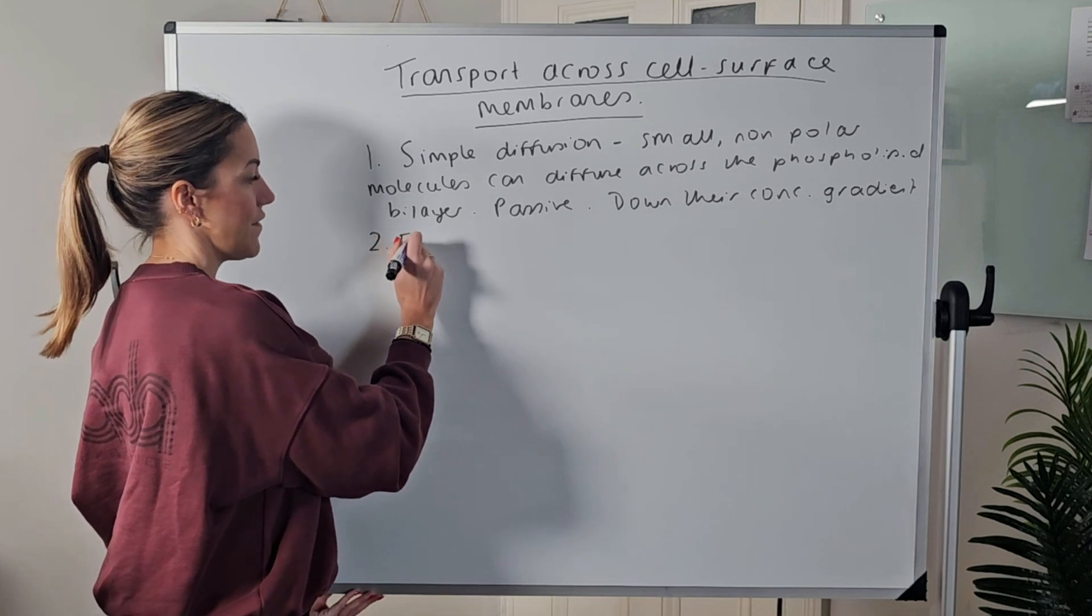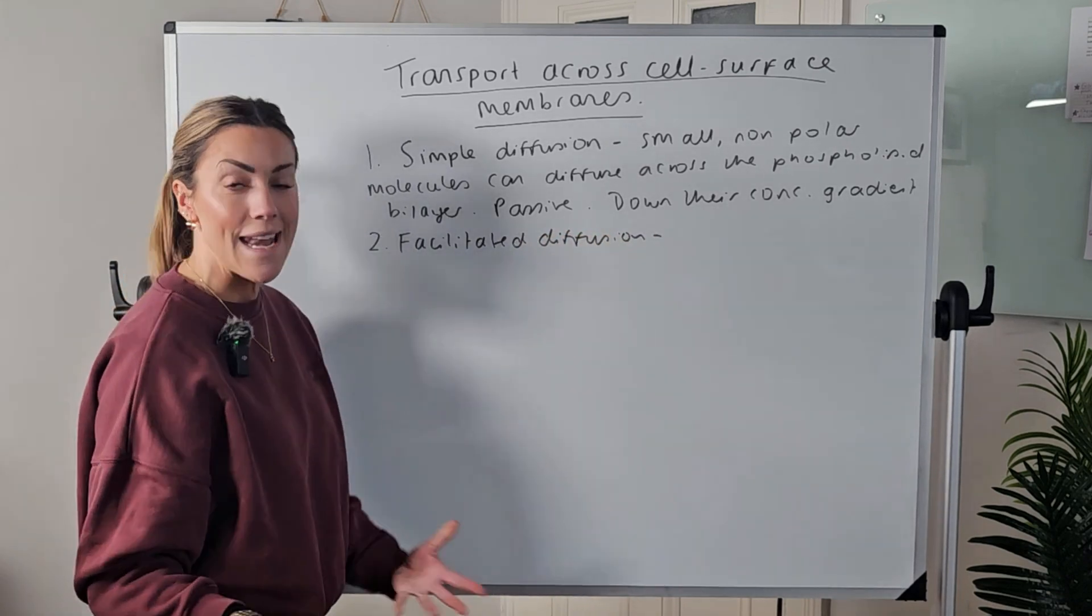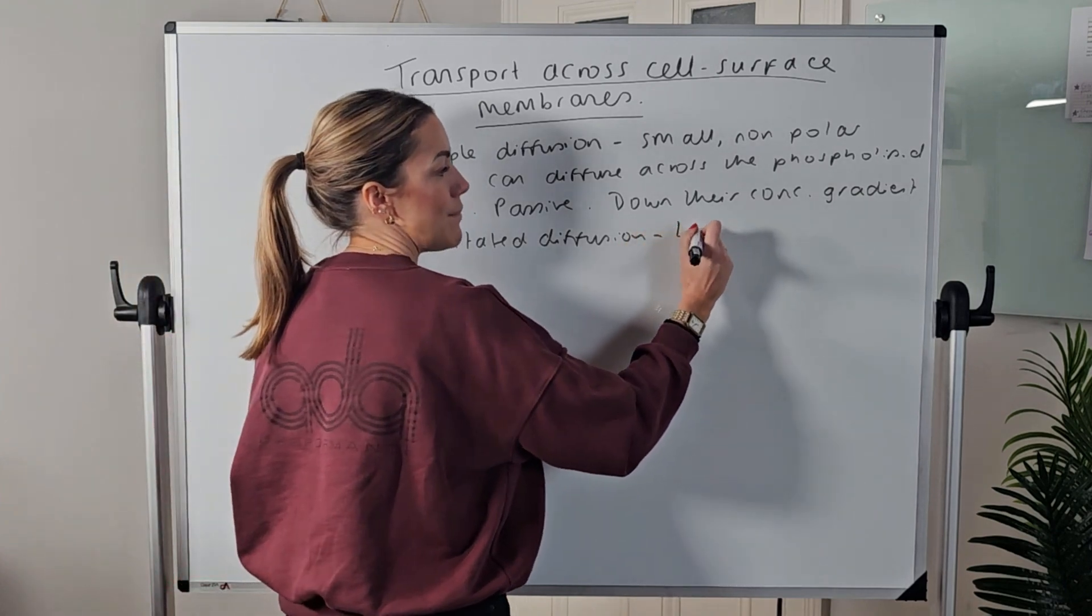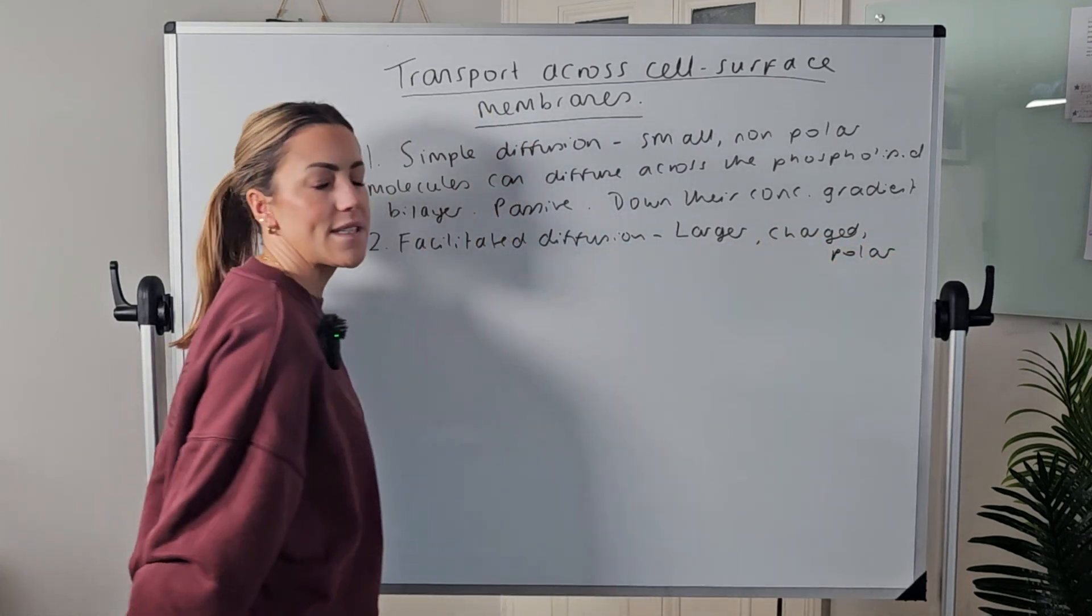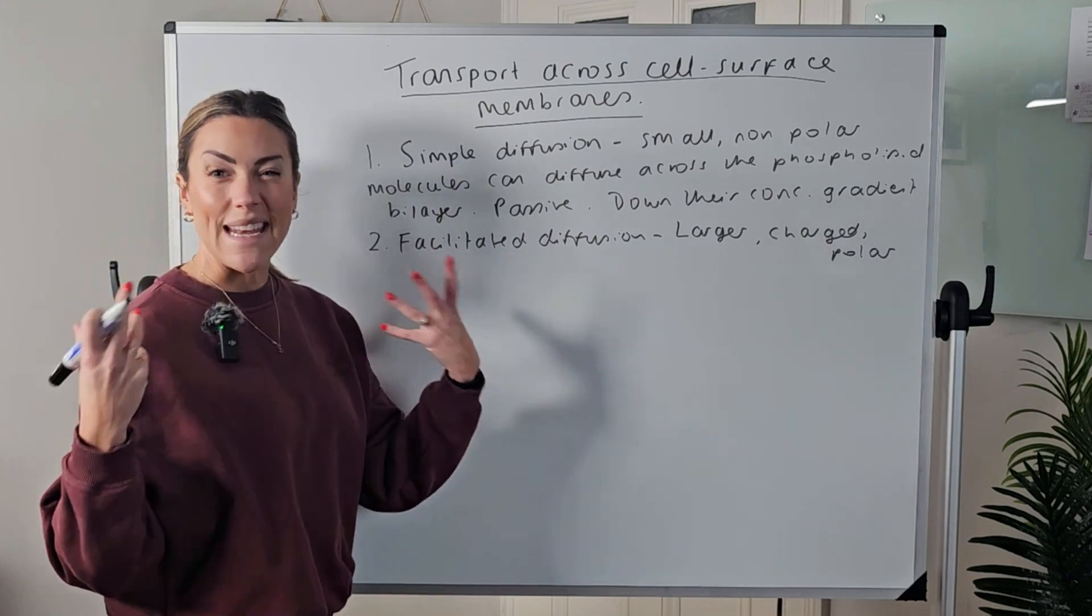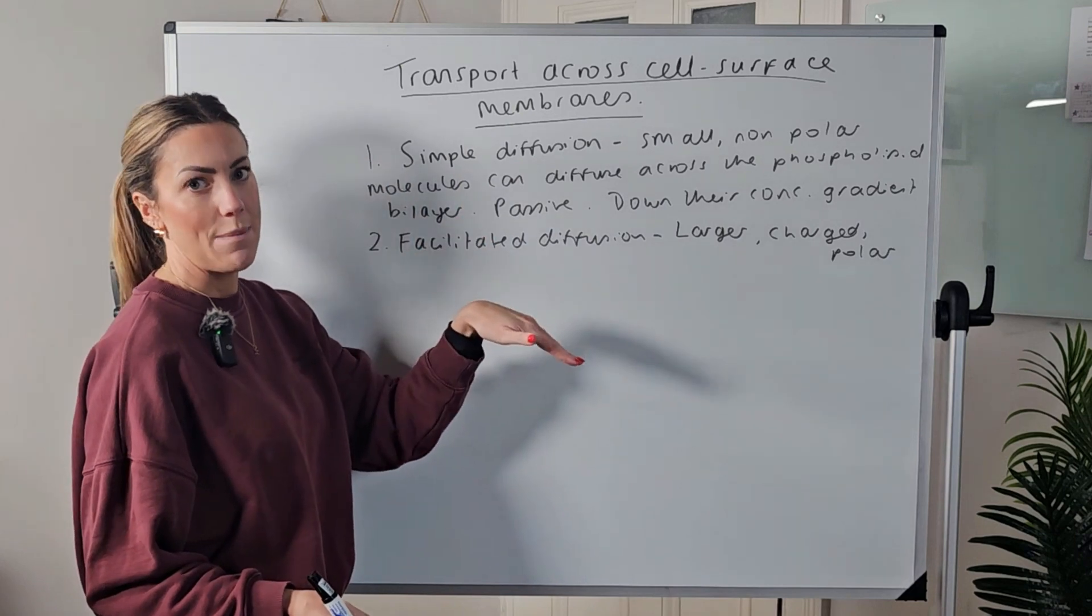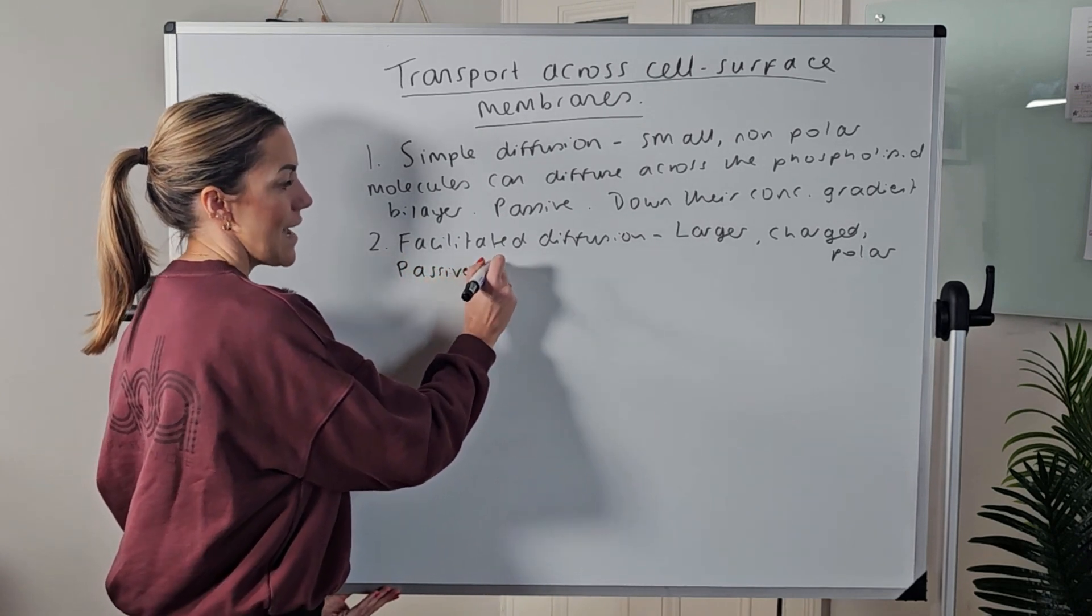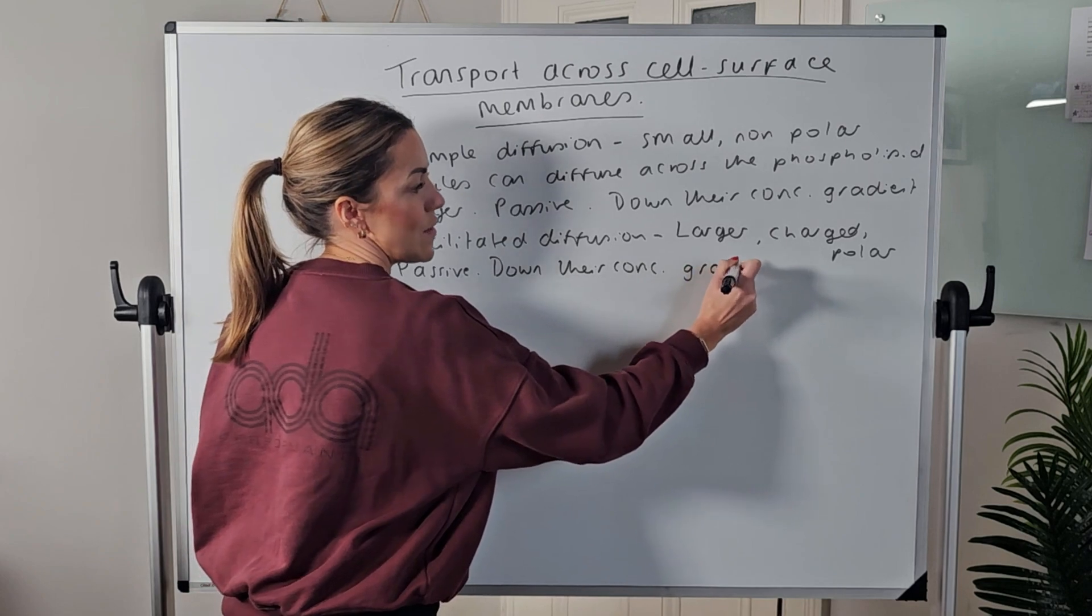Next we have facilitated diffusion, which basically is what it says on the tin - it's diffusion with a bit of help, it's facilitated. This would be used for maybe larger molecules or charged or polar substances, so it might be something like glucose or an amino acid which is a little bit larger, or it might be an ion which has a charge. So it cannot simply diffuse across the phospholipid bilayer, so instead it has to use facilitated diffusion. It's still passive and it's still down their concentration gradient, so it's still going from a region of higher concentration to a region of lower concentration.